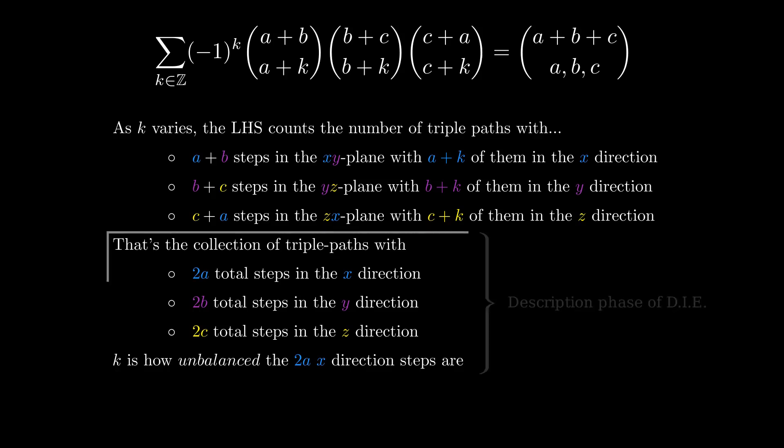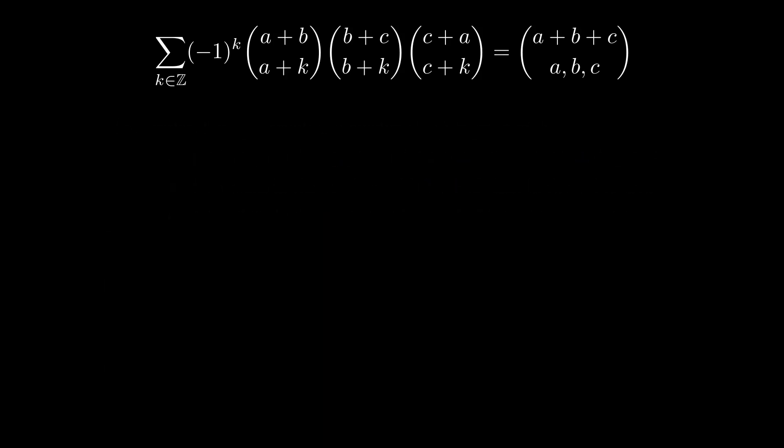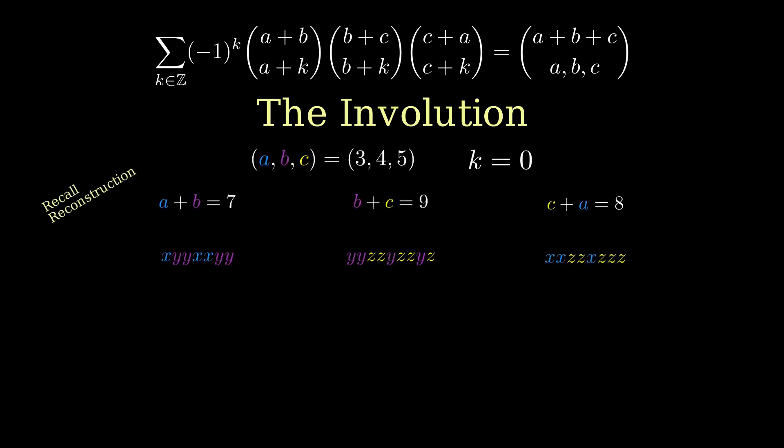Alright, we have the describe phase done, and we have a hint about the exceptions phase. There's no provision that these triple paths are reconcilable into a single 3D path. It's just triples of 2D paths. Now the hard part, coming up with the sign reversing involution. This is finally the noogity good piece of the video. Remember how when we investigated the trinomial coefficients, we reconstructed the xyz path from the projection onto the planes? Well, that's going to be the very way we proceed.